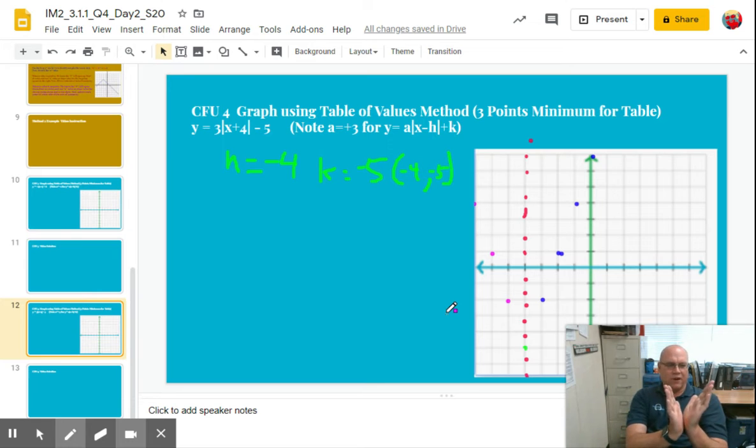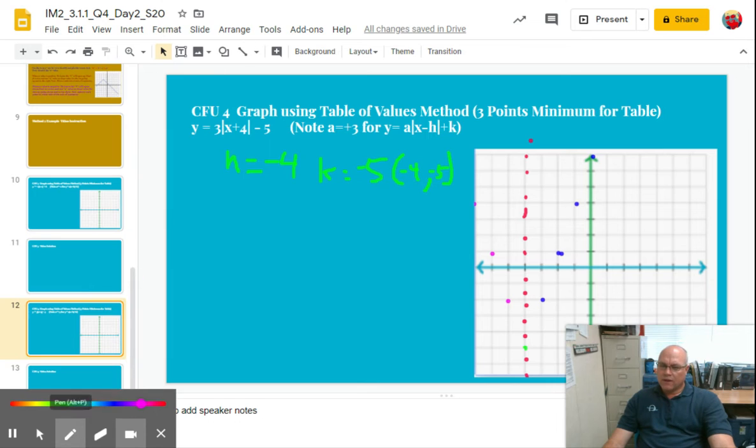So your V doesn't have to be perfect. You can have V's depending on how much of a graph you have to show. You're not going to have it nice and symmetrical all the time. So let's draw this one so you see it. Let's use this. All right. So I'm going to try my best here with the mouse.